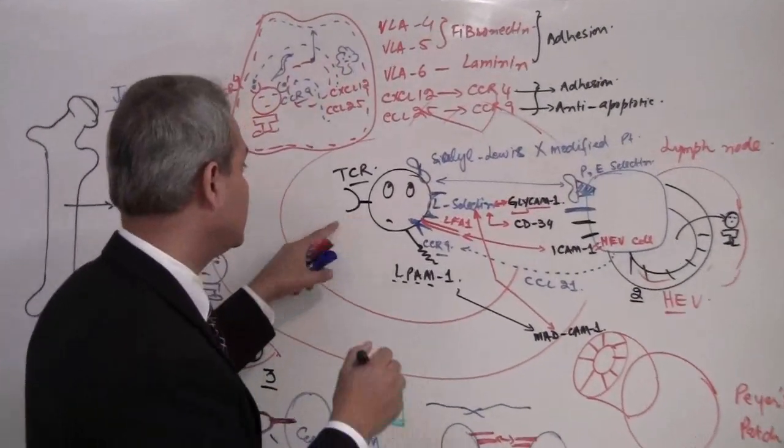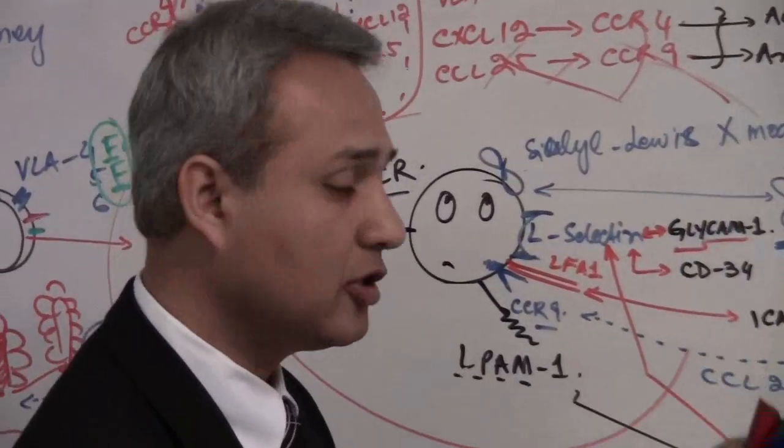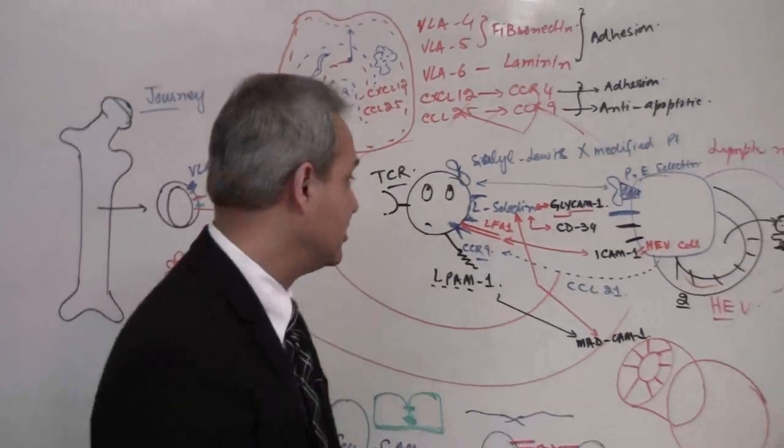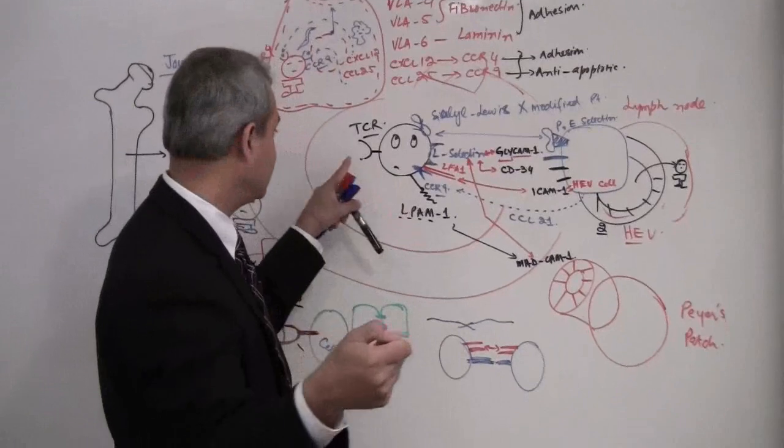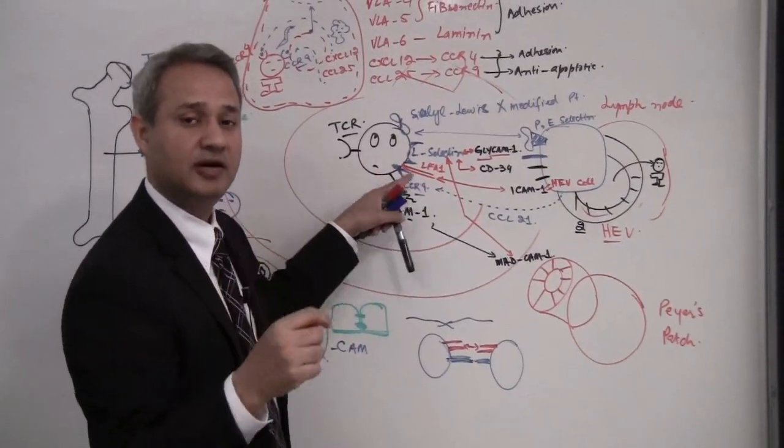So this T cell receptor, what it is going to do, this T cell is going to try to use its T cell receptor and go near every dendritic cell. Remember, dendritic cells have a lot of dendrites. So it's going to go near those dendritic cells and try to attach its T cell receptor to the antigens they are holding and see if it can become activated.